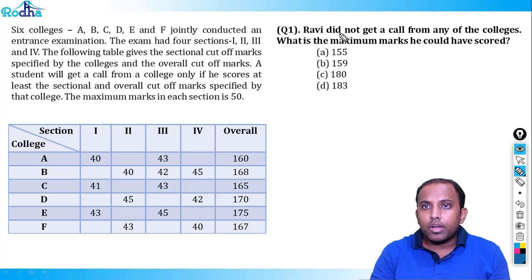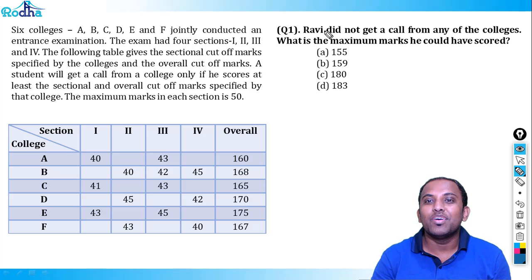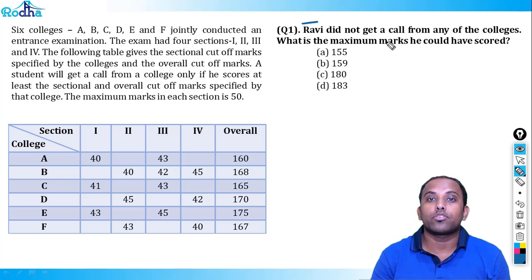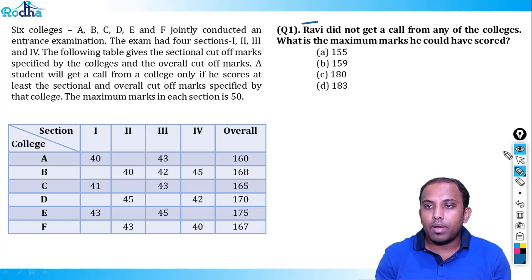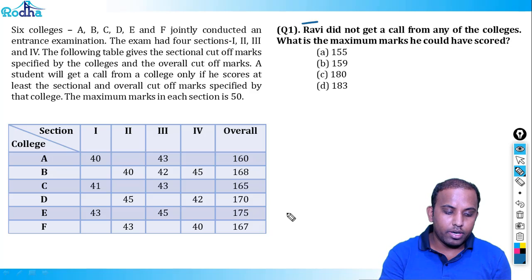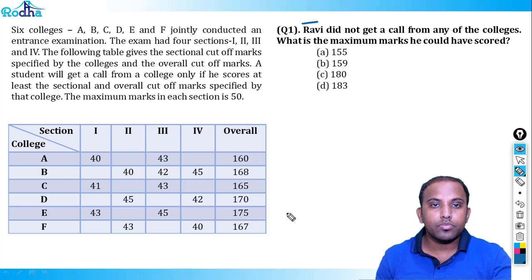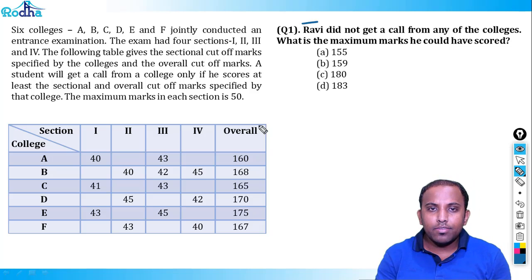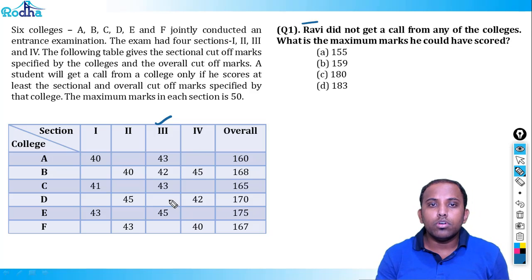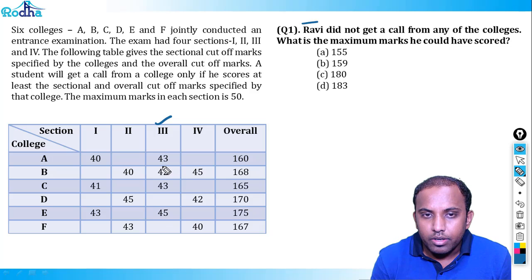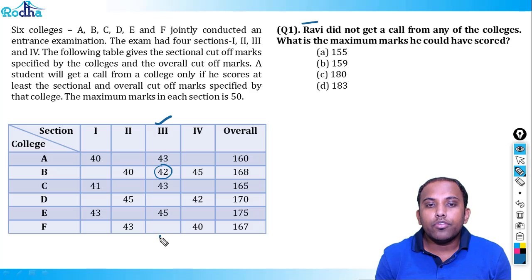The first question: Ravi did not get a call from any of the colleges. What is the maximum marks he could have scored? How do you start such a set? Section 3 has the maximum data values given, so we start there. The minimum cutoff in section 3 across colleges is 42, so let's say Ravi scored 41 marks in section 3.